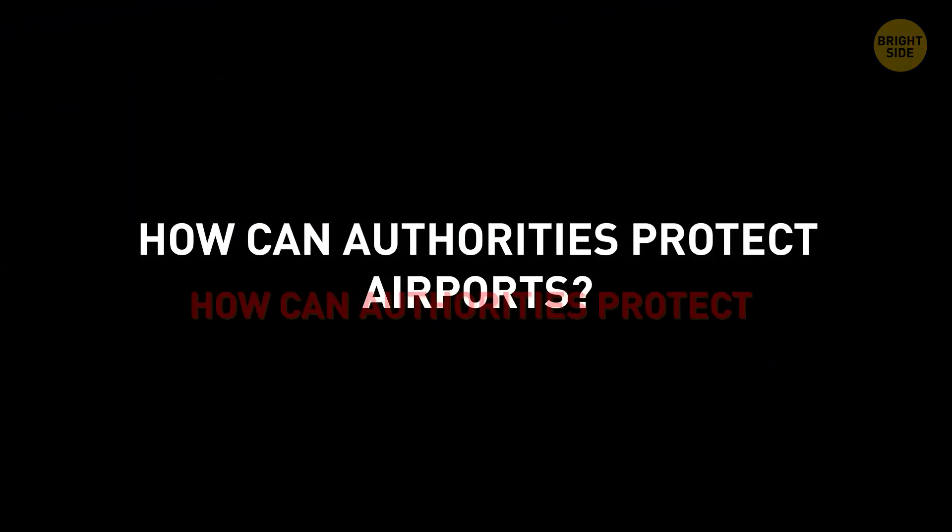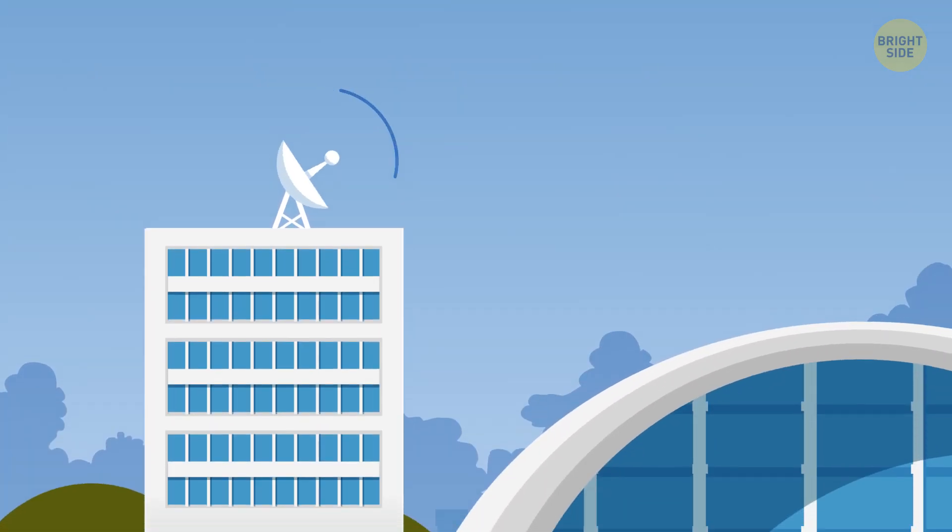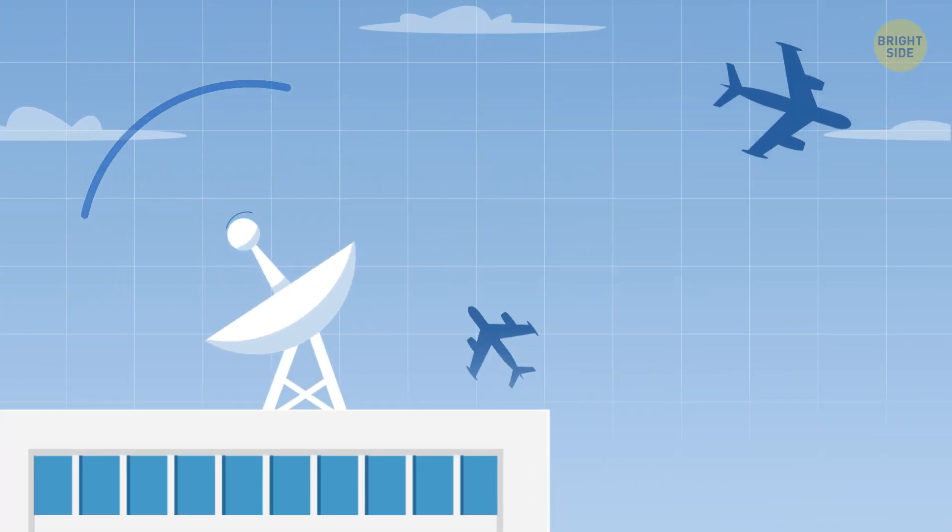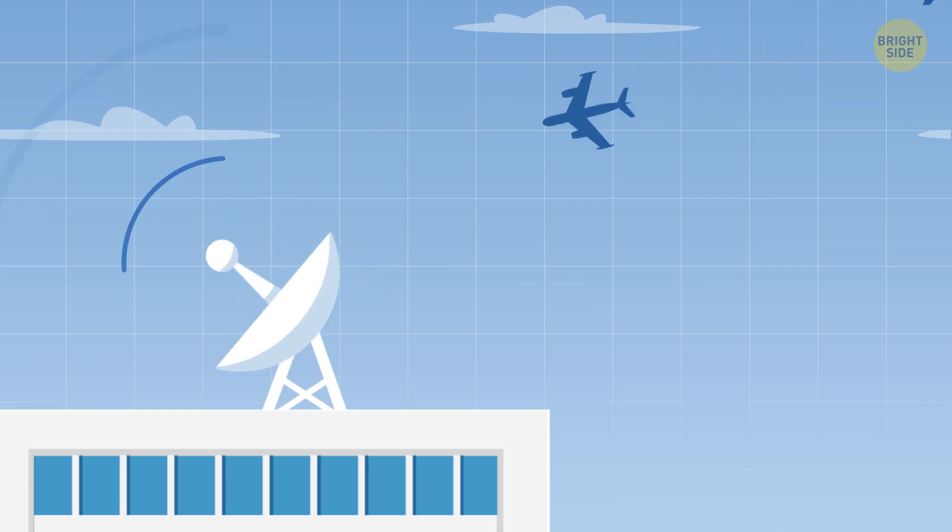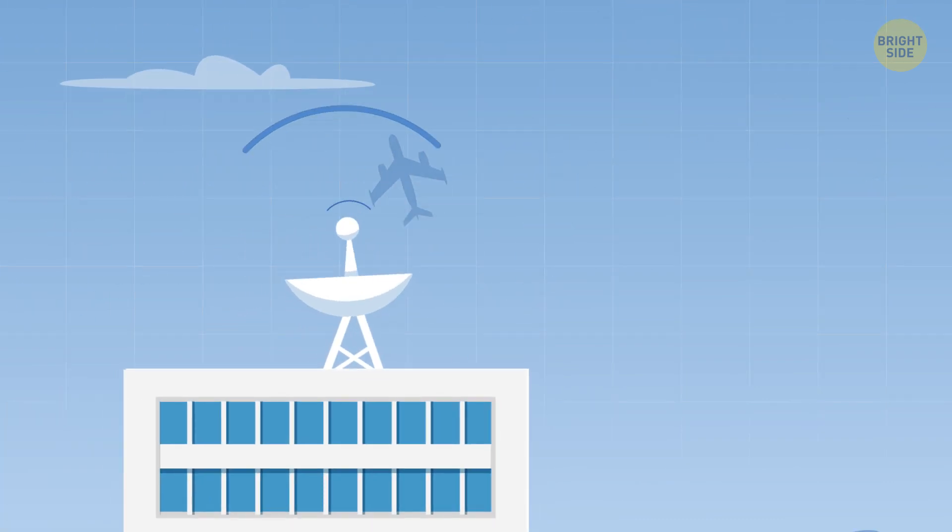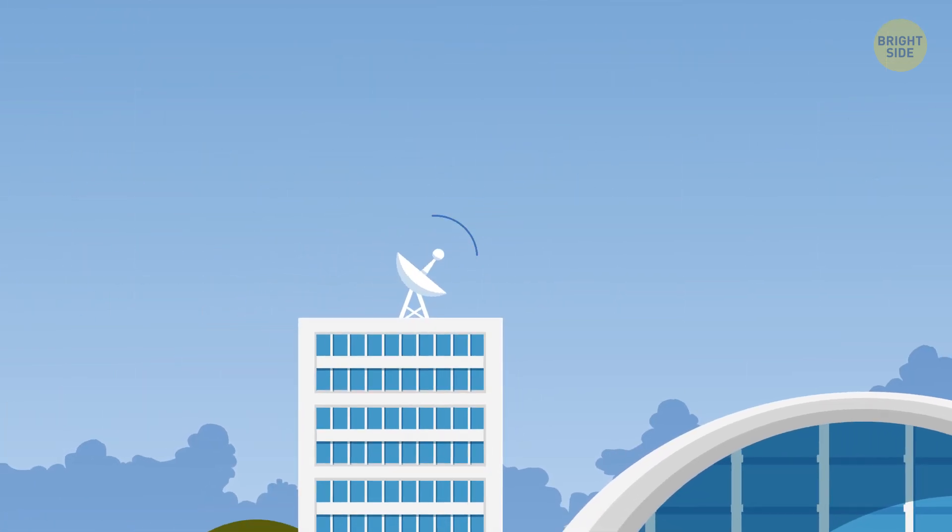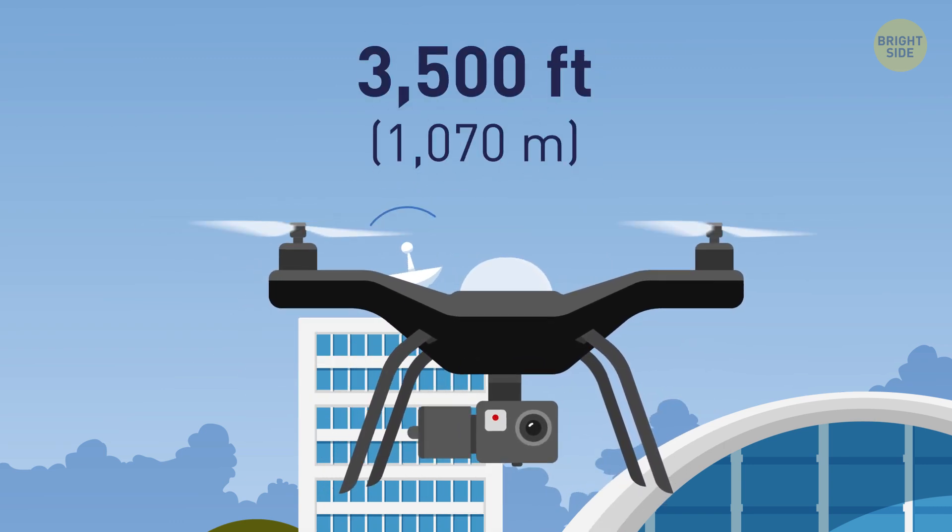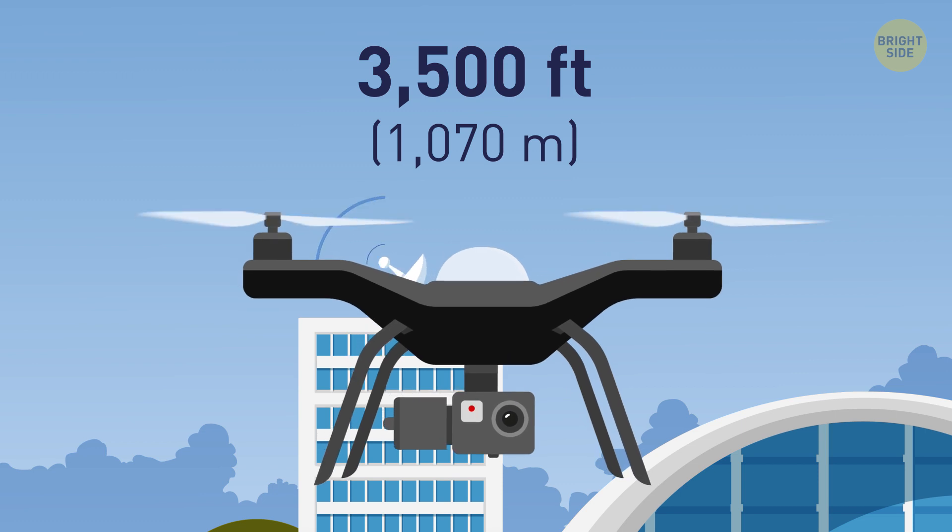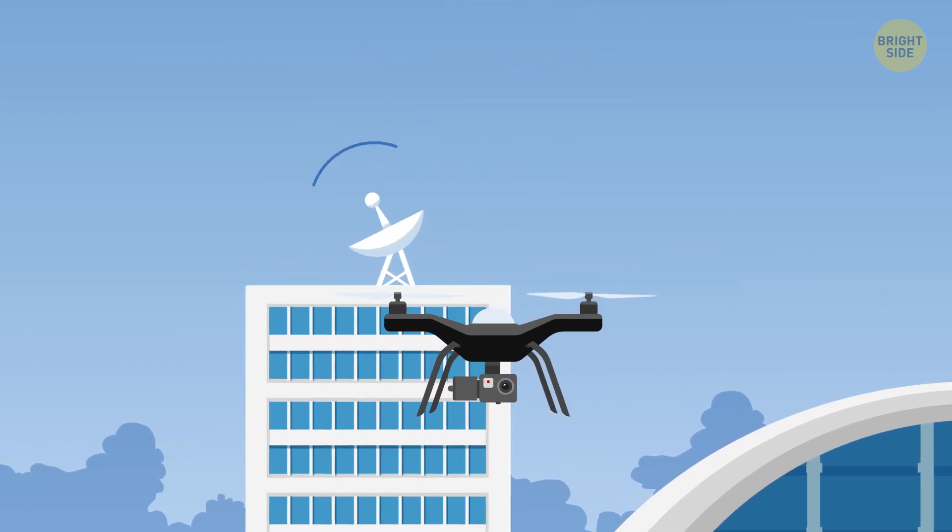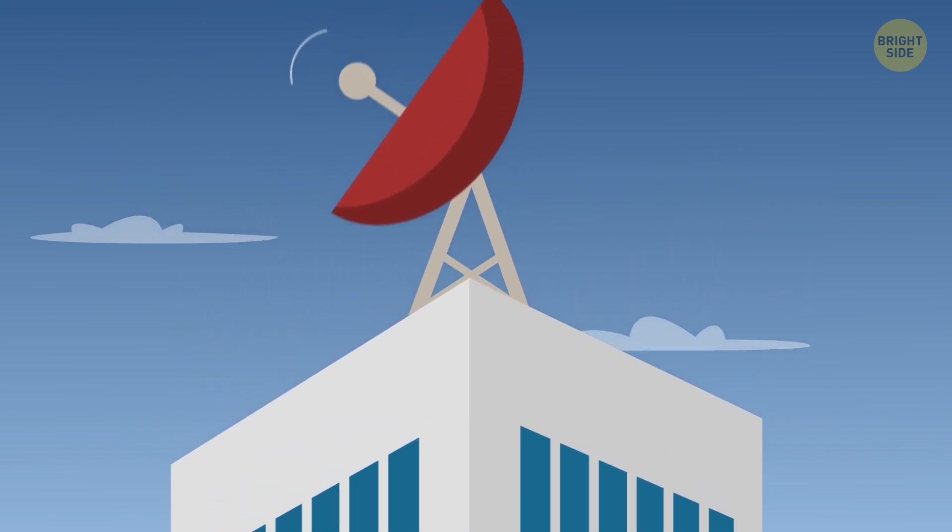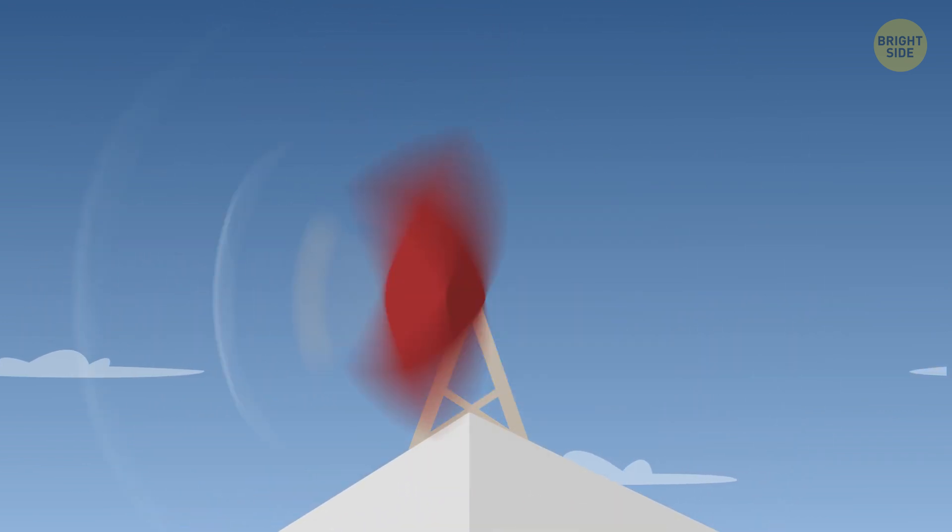But then, the question is, how can authorities protect airports? I used to think that it should be an easy task. After all, all airports have radars, and they can spot any flying object, right? It turns out, though, that the issue is a bit more complicated. The drones that cause the most problems don't usually rise higher than 3,500 feet. But that's way lower than traditional air traffic control radars look. That's why airports need radars that have fast update speed and lower gates.